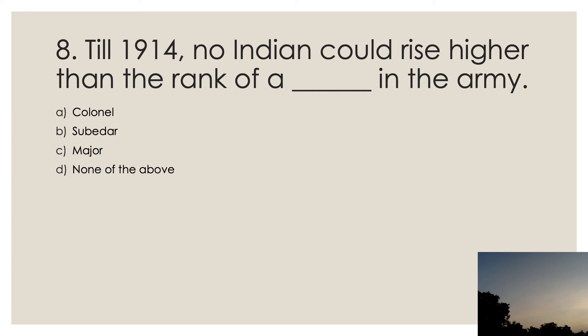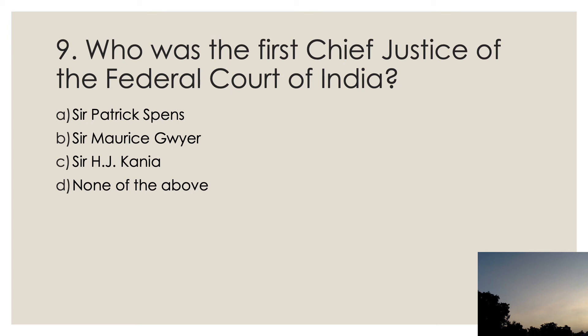Question eight: till 1914, no Indian could rise higher than the rank of a blank in the army. The options are colonel, subedar major, and none of the above. The right answer is subedar. We studied in the lesson on the army that for a very long time Indians were not allowed to occupy positions of authority, as the British wanted to keep command with themselves — especially after 1857 — to ensure Indians remained subordinate.